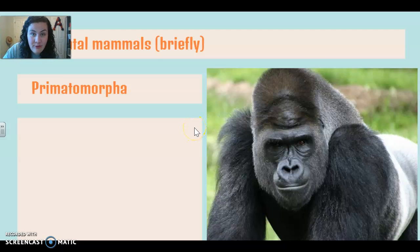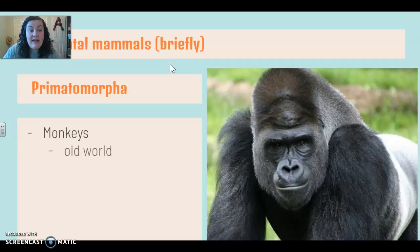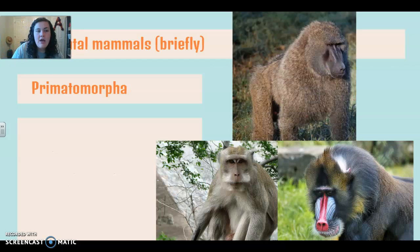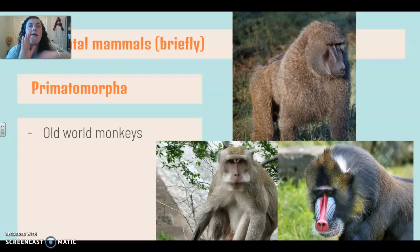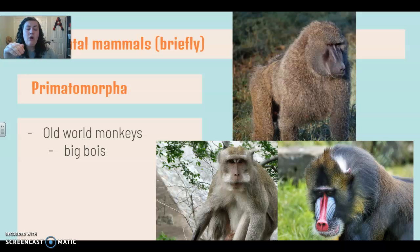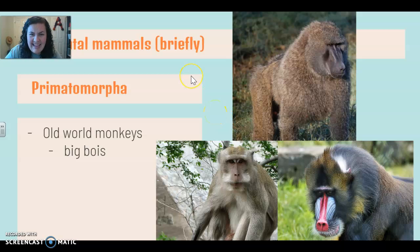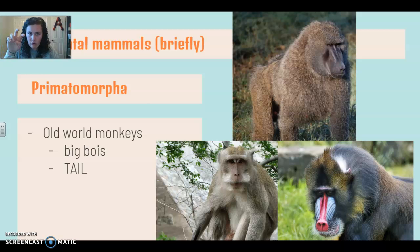Our next group is Primatomorpha. I want to sit on this group for just a little bit because it is the most interesting to me. Your Primatomorpha is going to include your old world and new world monkeys — we'll talk about the difference — and it also includes your apes. The difference between a monkey and an ape is monkeys have tails, and generally monkeys are smaller and not as smart. Your old world monkeys include your gibbons, your macaques, your mandrills. They're called old world monkeys because they live in the old world — in China, in Asia, in Africa.